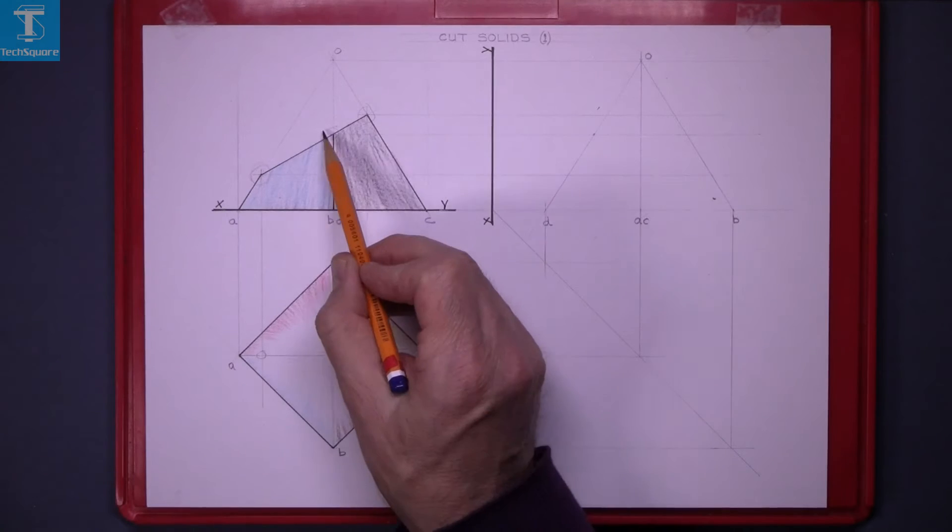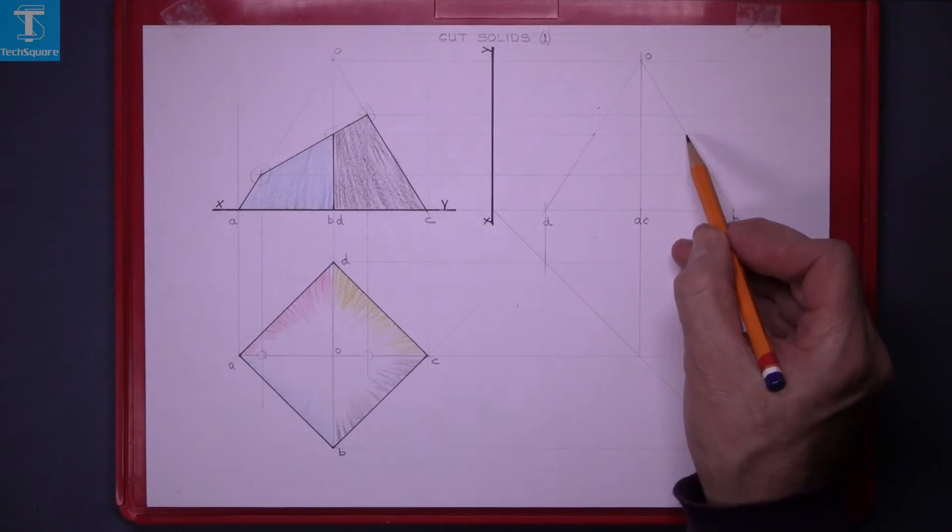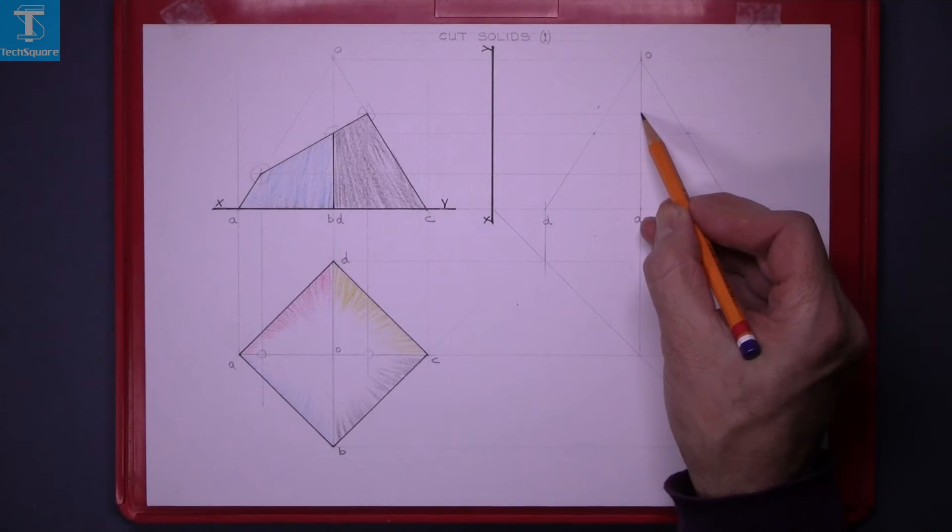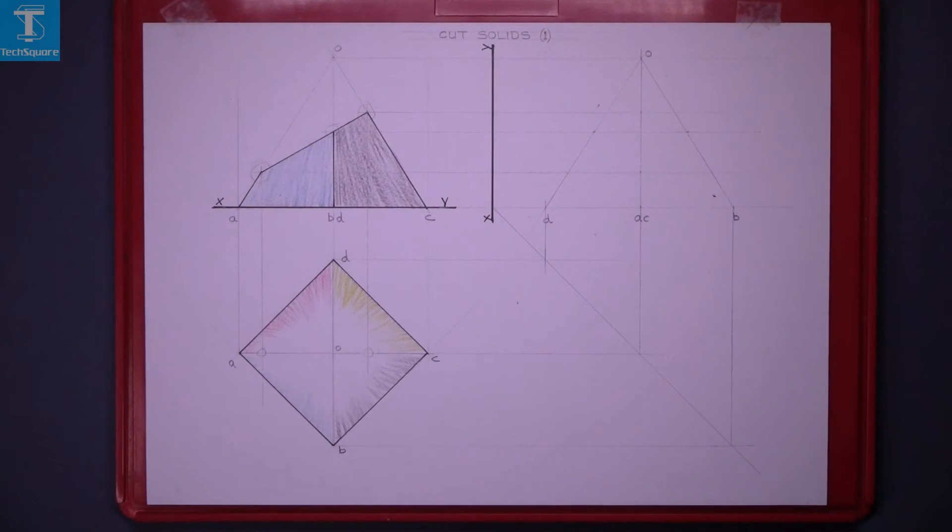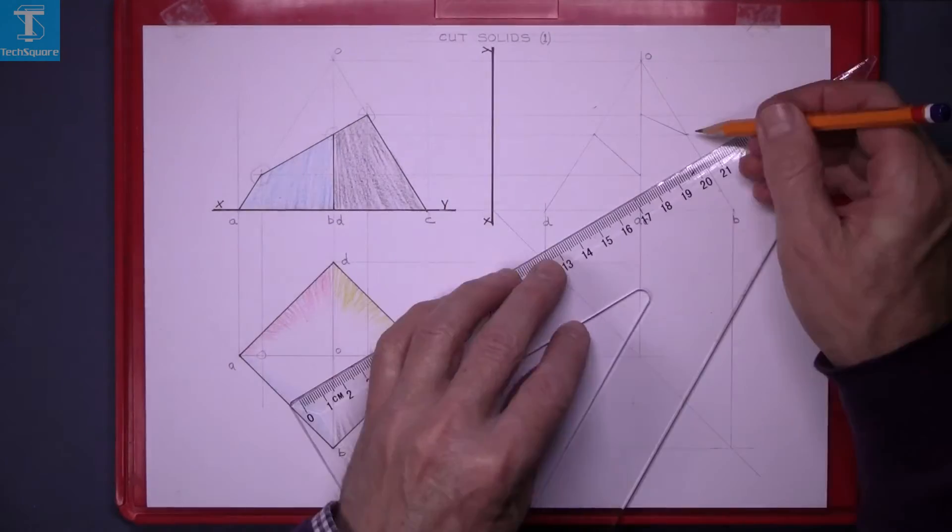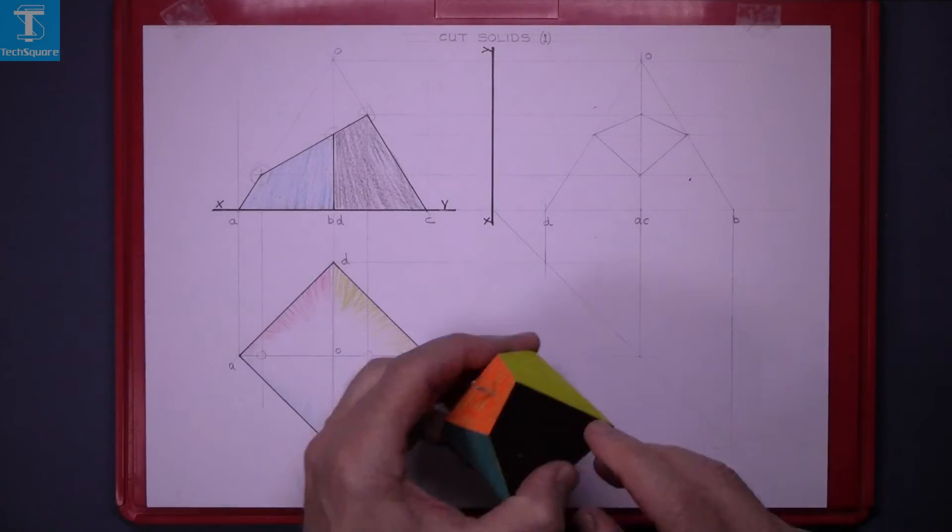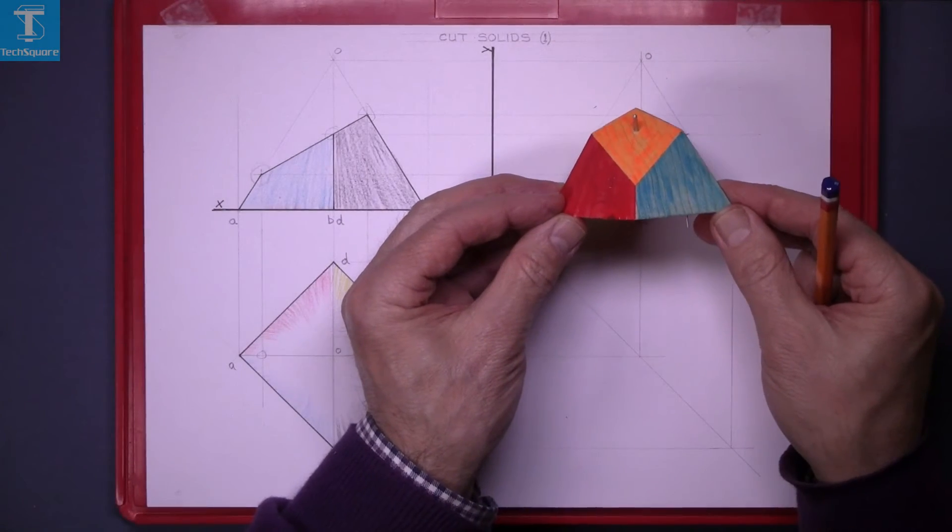BO is a line at the back and this is where it's cut and that's the back one and the front one there. Join those points now to get the end view of the sectioned surface and that's what it looks like there now.